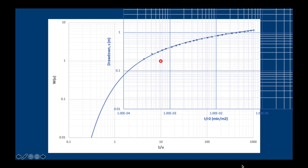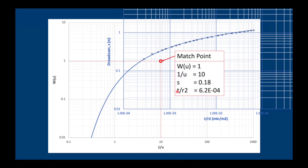So next thing we do is we need to get what's called a match point. So basically it's just a point on our graph where we can read off all the data. It's advisable to use a match point where W(u) or the well function is 1 and 1 over u is either 1 or 10 because that makes the subsequent calculations a lot easier. So here's our match point. It is located as I mentioned W(u) well function is 1, 1 over u is 10. And then the next step is to read off the drawdown s and t over r squared from our data plot.